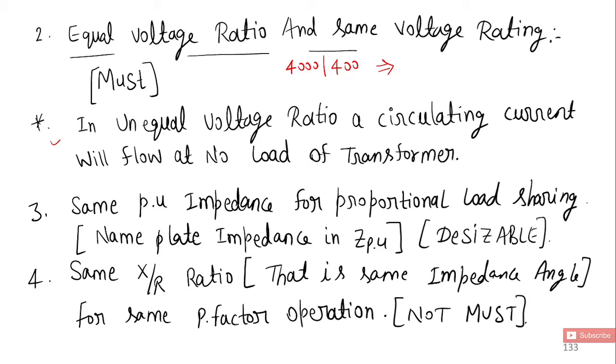In unequal voltage ratio, circulating current will flow at no-load of the transformer. If this is not same for both transformers, there will be circulating current at the load side and this will reflect at primary side also, so you can't connect with different voltage ratio.